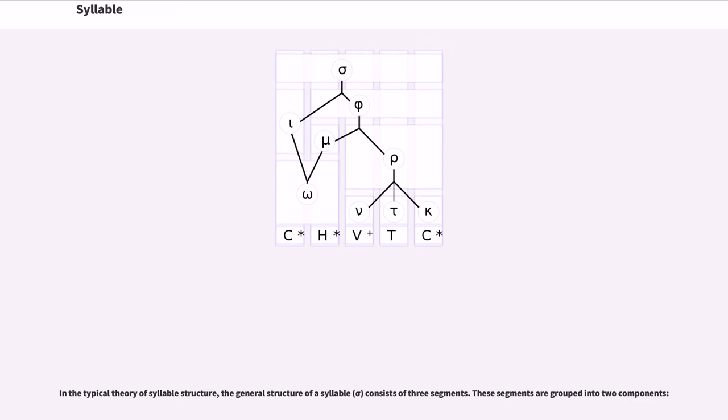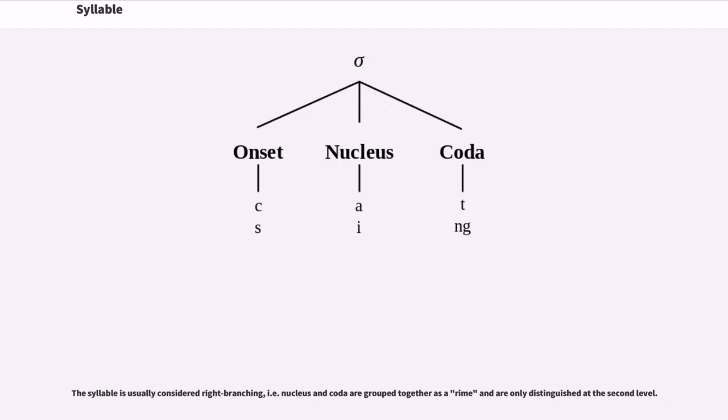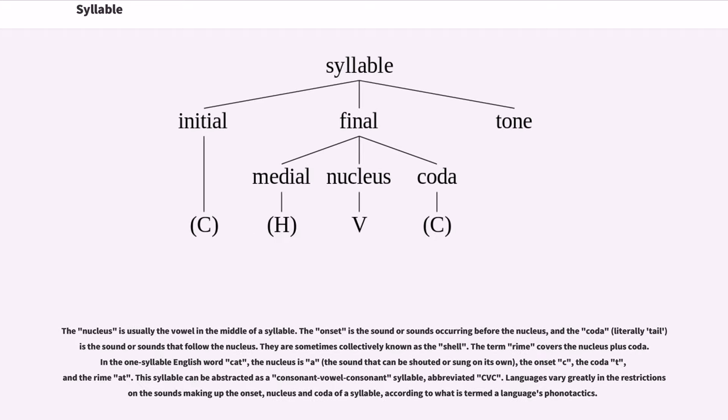In the typical theory of syllable structure, the general structure of a syllable consists of three segments. These segments are grouped into two components. The syllable is usually considered right branching, i.e. nucleus and coda are grouped together as a rhyme and are only distinguished at the second level. The nucleus is usually the vowel in the middle of a syllable. The onset is the sound or sounds occurring before the nucleus, and the coda is the sound or sounds that follow the nucleus. They are sometimes collectively known as the shell.